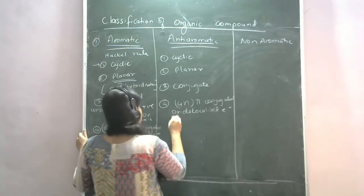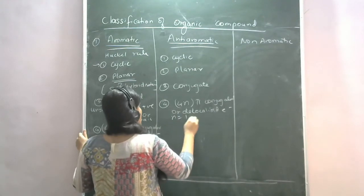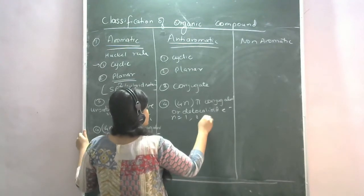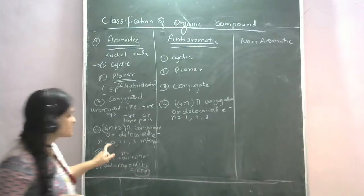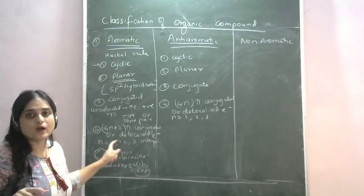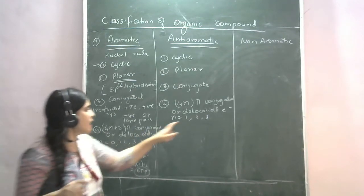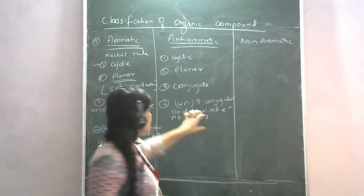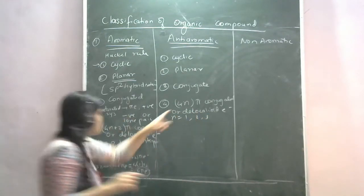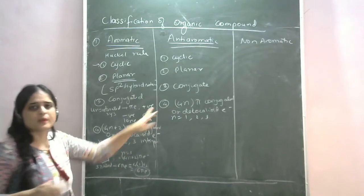For anti-aromatic compounds, N = 1, 2, 3, etc. For aromatic compounds, N = 0, 1, 2, 3. This last point — the value of N — is what differs between the two categories.